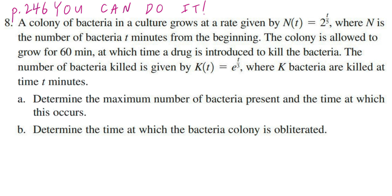The colony is allowed to grow for 60 minutes, at which time a drug is introduced to kill the bacteria. The number of bacteria killed is given by k of t equal to e to the power of t divided by 3, where k bacteria are killed at time t minutes. Part A: determine the maximum number of bacteria present and the time at which this occurs.